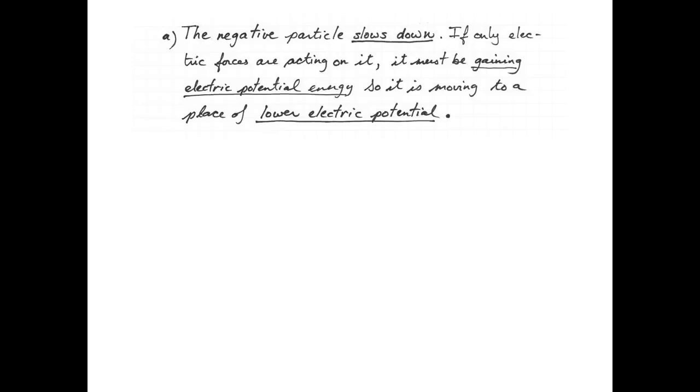it has to be gaining potential energy. And negative particles gain potential energy when they move to a place of lower electric potential. On the picture, it means that the place of higher electric potential is more in the upper left-hand corner, and the place of lower electric potential is in the lower left-hand corner.